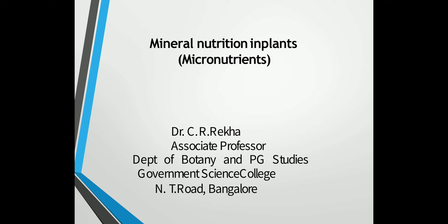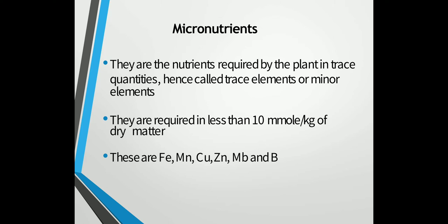What are micronutrients? Micronutrients are the nutrients required by the plant in less quantities, hence they are called as trace elements or minor elements. They are required in less than 10 millimolar per kg of dry matter. Some of the important micronutrients are iron, manganese, copper, zinc, molybdenum and boron.